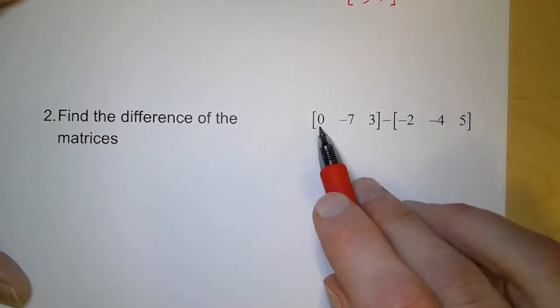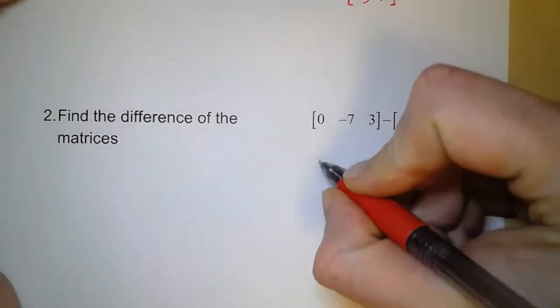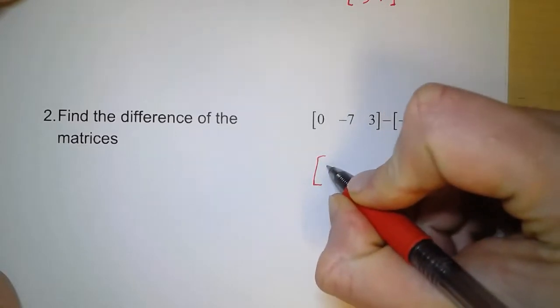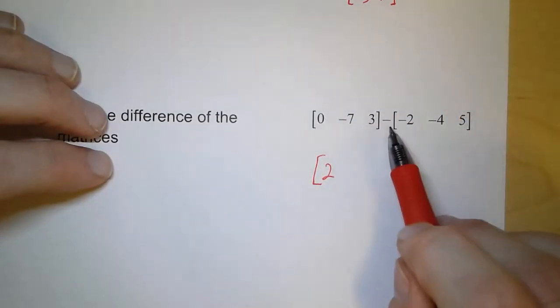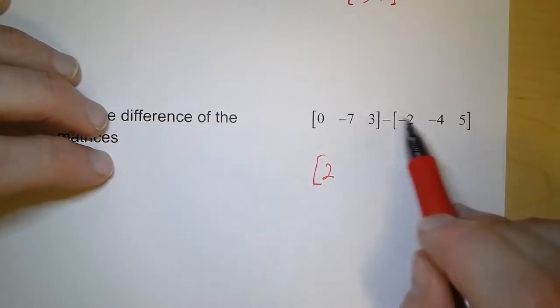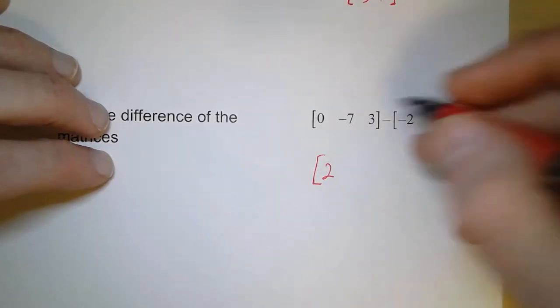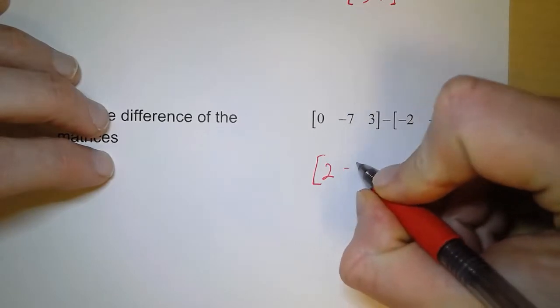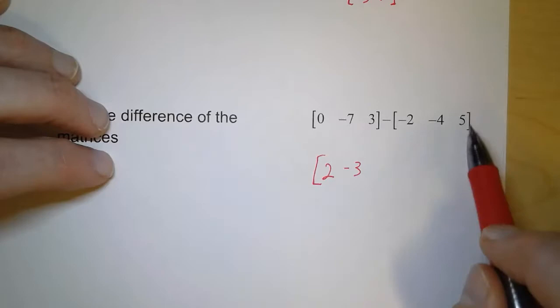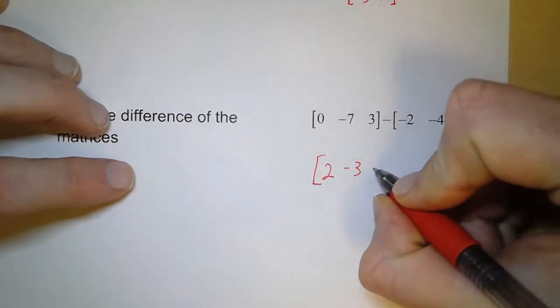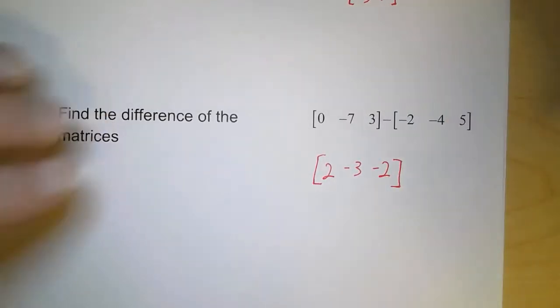So I'm going to subtract 0 and negative 2. So 0 minus negative 2 is going to be a positive 2. Negative 7 minus negative 4 means we're going to be taking negative 7 and adding 4, so that gives us negative 3. And then we're taking 3 and subtracting 5, and that gives us negative 2 for our answer.